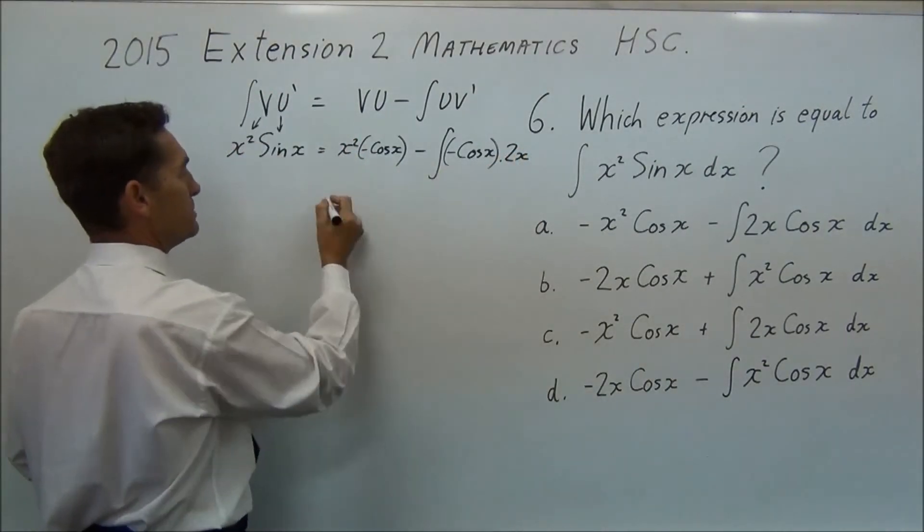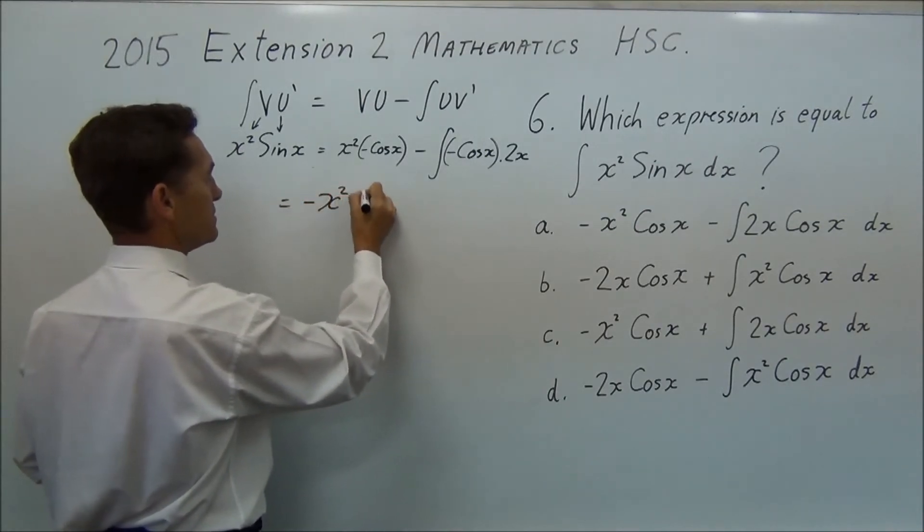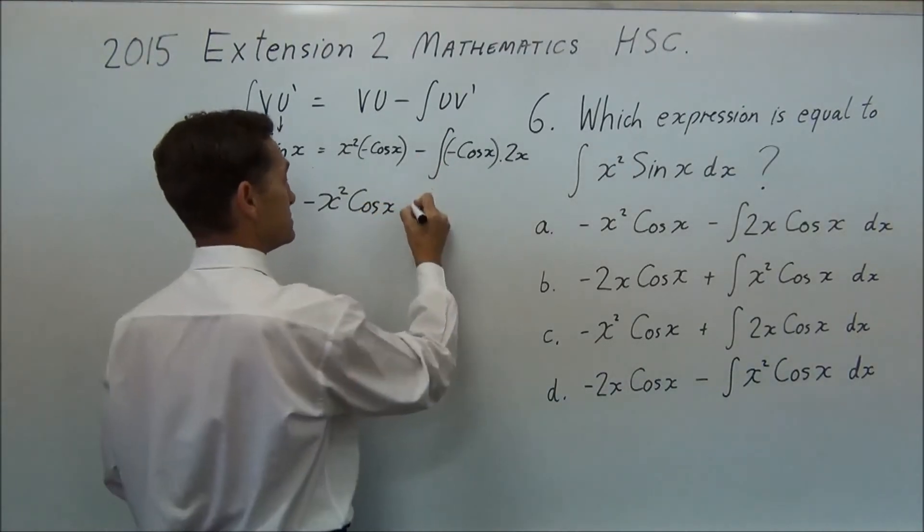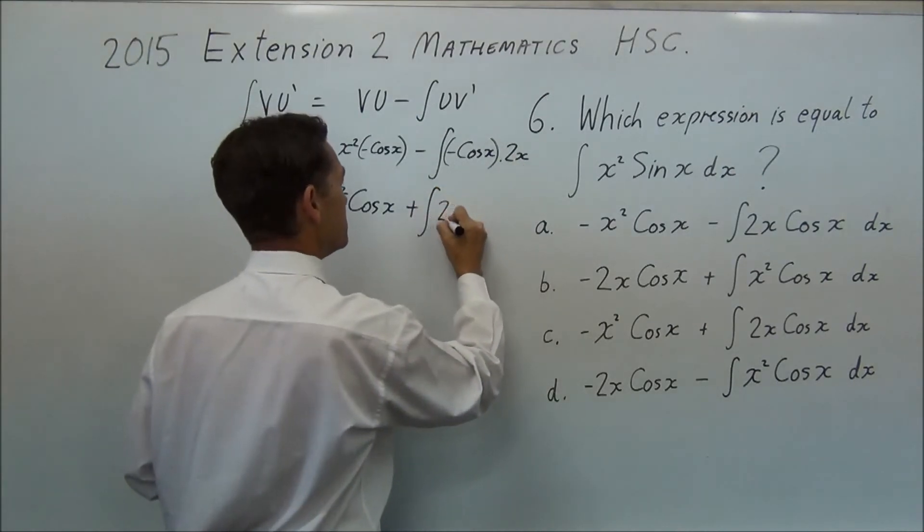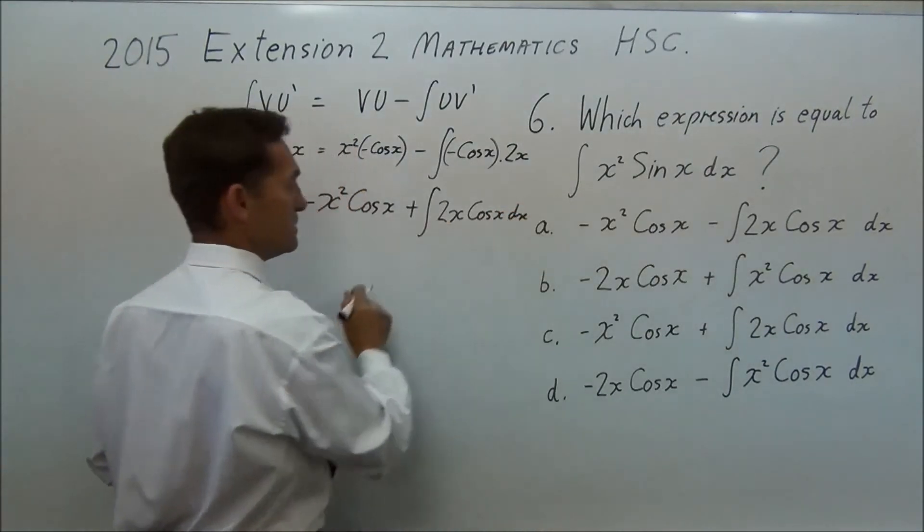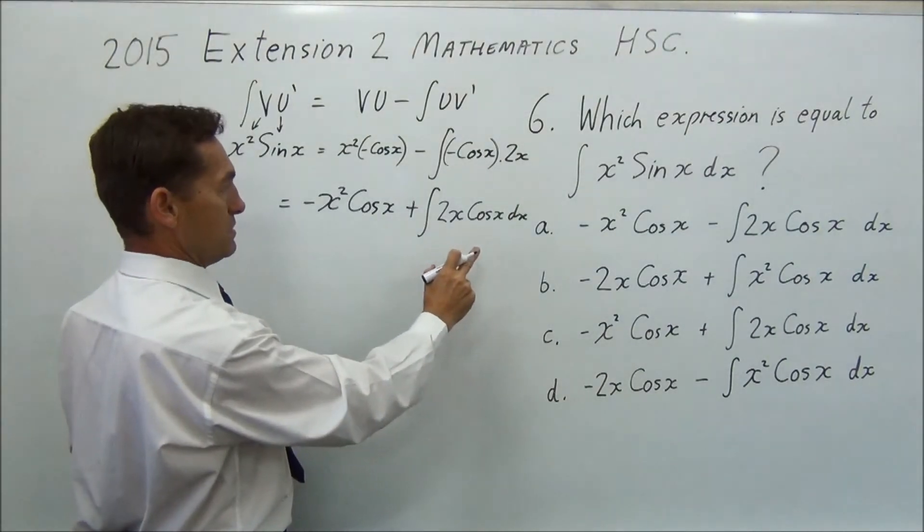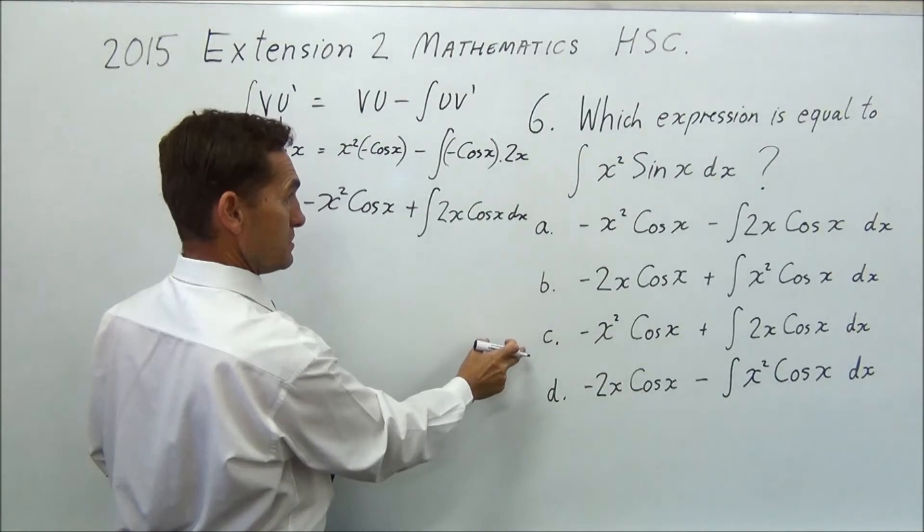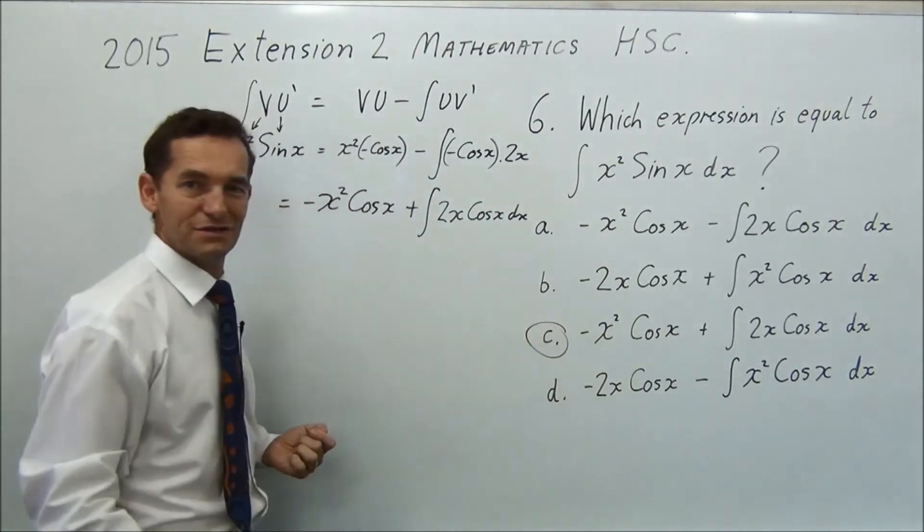So multiply by 2x. Clean that up a little bit. So we're going to get equals minus x squared cos x. Minus minus is a plus. Plus, usually write the 2x in front. 2x cos x dx. And which one looks like that? A, b, c. I'm going to go for c. So you're done.